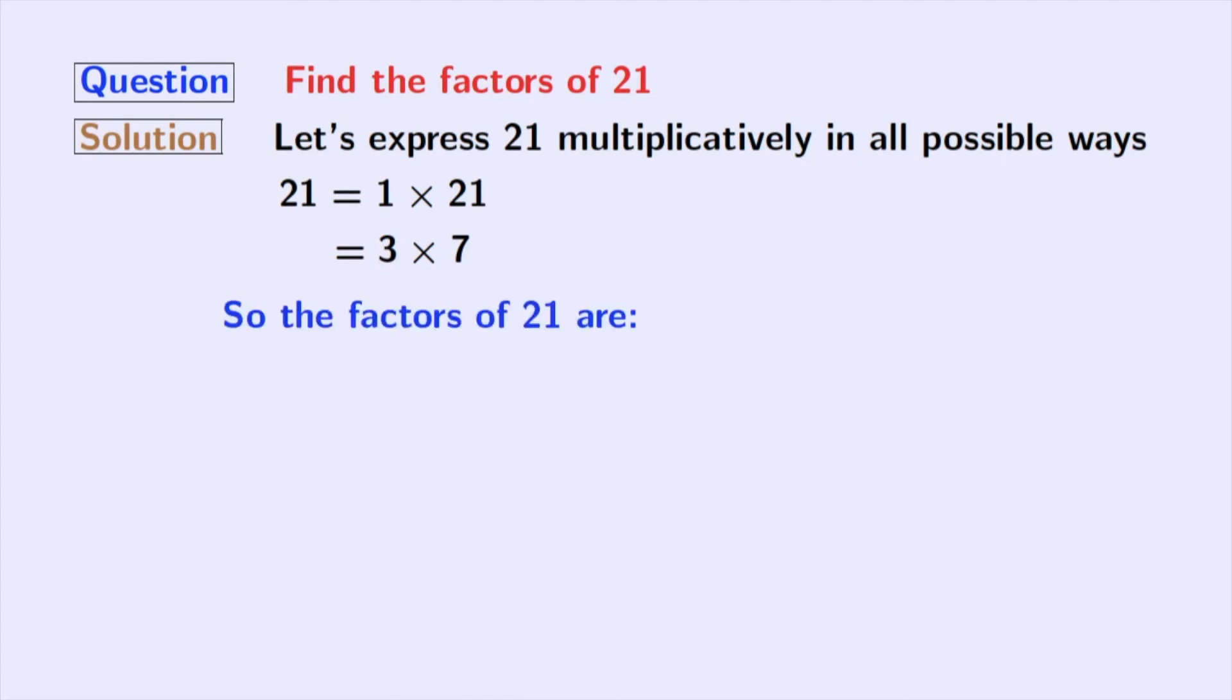Now, look that we have obtained all the factors of 21 which are 1, 3, 7, and 21. So, the total number of factors of 21 is 4.